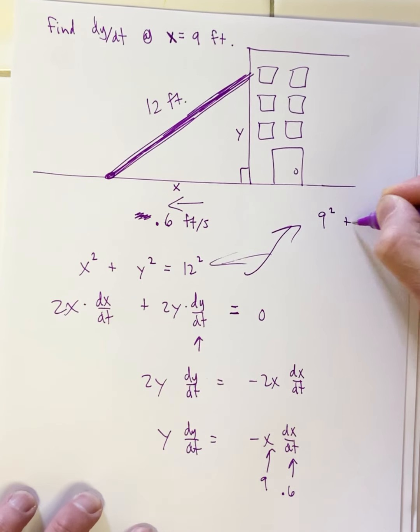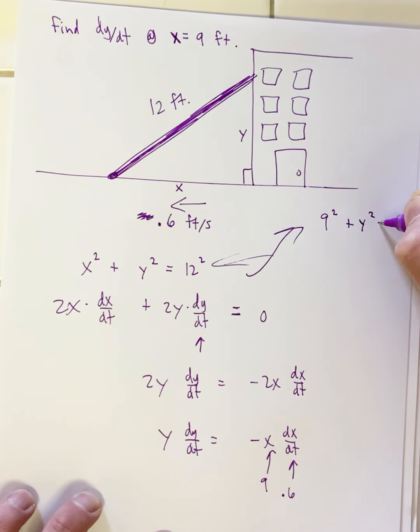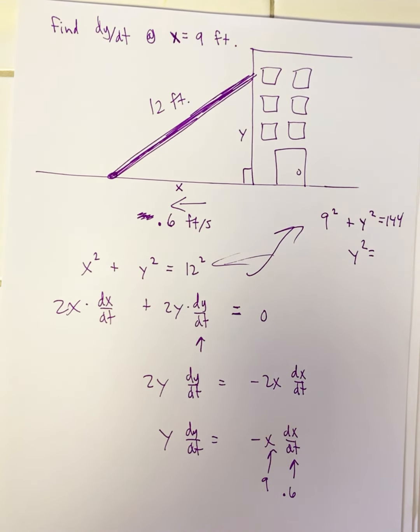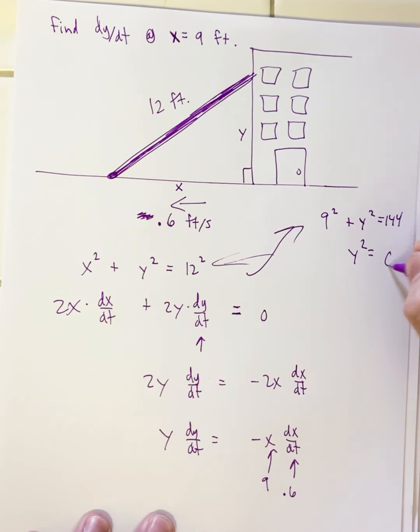We'd have 9 squared plus y squared equals 144. So y squared is, what's 144 take away 81? We have 63. And you can take the square root of that. So y equals the square root of 63.